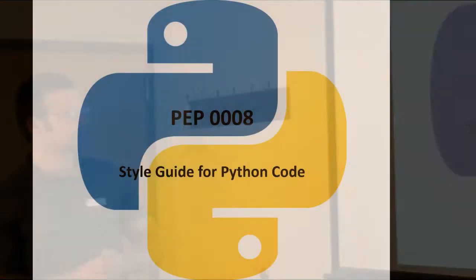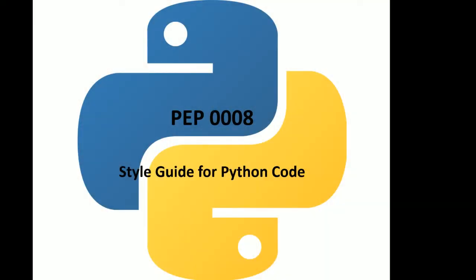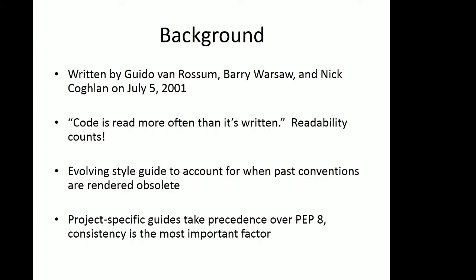PEP 8 was written by three people — I only knew the first one. Barry Warsaw and Nick Coghlan also helped with its creation. The core mantra behind why we have this is: code is read more often than it's written. Readability counts — I 100% agree with that.